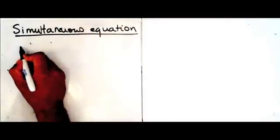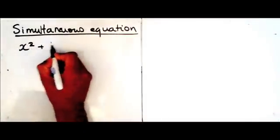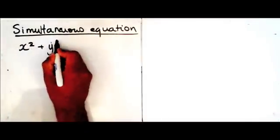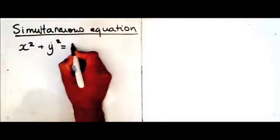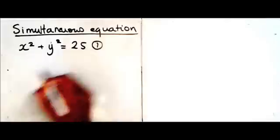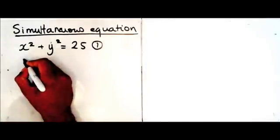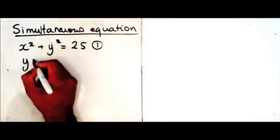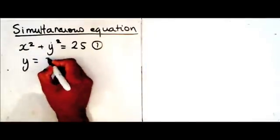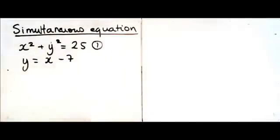The question is x squared plus y squared is equal to 25 — that's equation number 1. And on the other side we have y is equal to x minus 7.